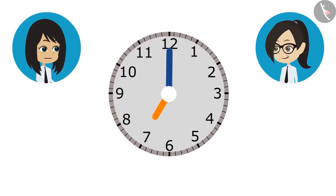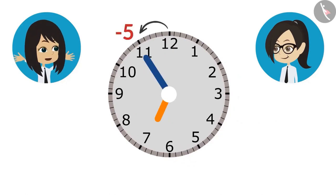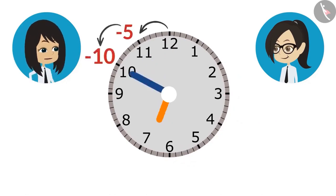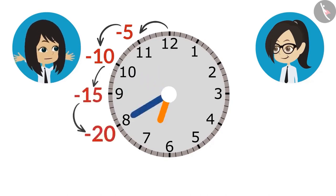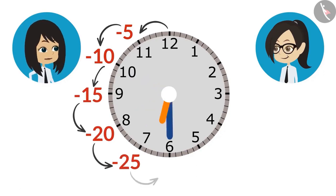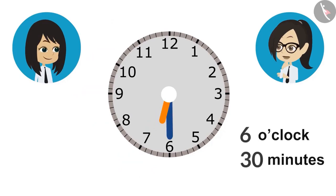Right now the clock is at 12. To subtract 30 minutes, from 12 to 11 reduces 5 minutes. When it comes to 10, then 10 minutes, 15 at 9, 20 at 8, 25 at 7, and 30 minutes when it reaches 6. This means tomorrow we have to leave home at 30 minutes past 6 o'clock without fail.